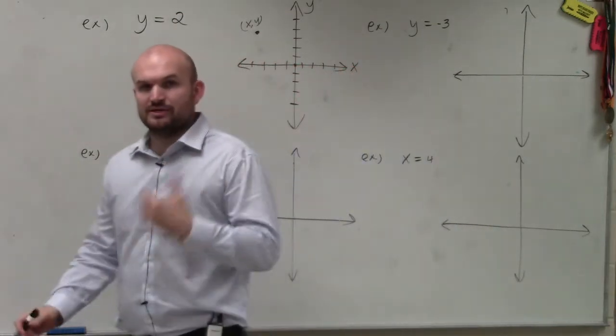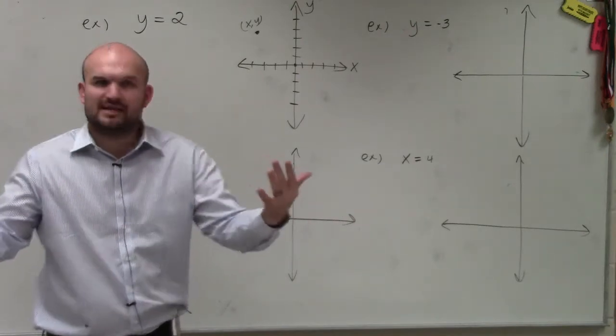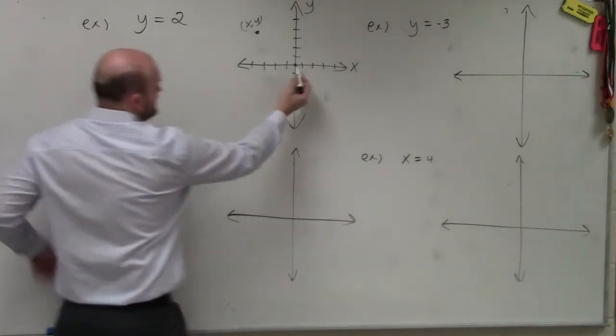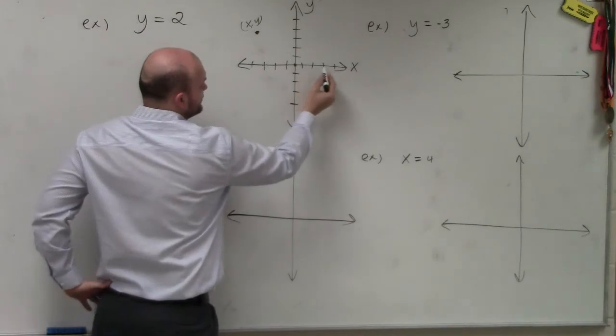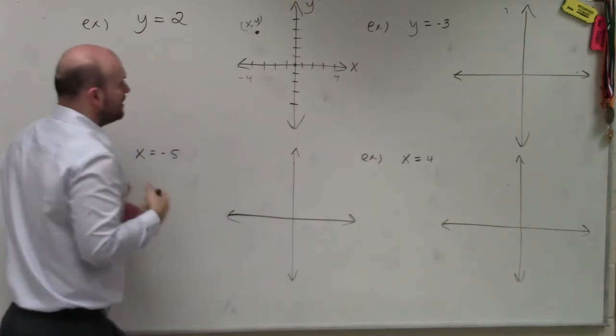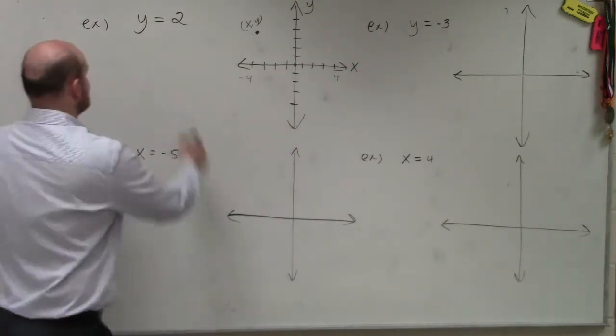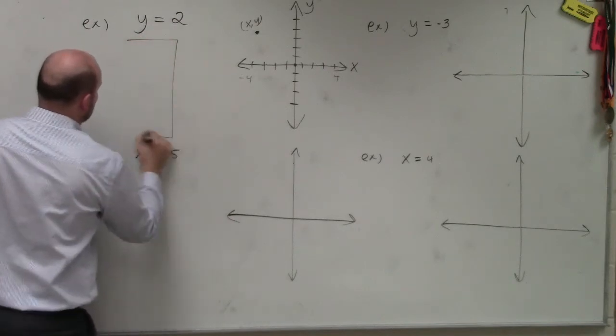So a lot of times what we can do is, when we're graphing, if we're given an equation, just create a table. And typically, you can see my scale here. I go 1, 2, 3, 4 to negative 1, 2, 3, 4. Right? So a lot of times, if I'm going to want to graph this, I might want to use my scaling and choose some points between. So I have my x and my y points.